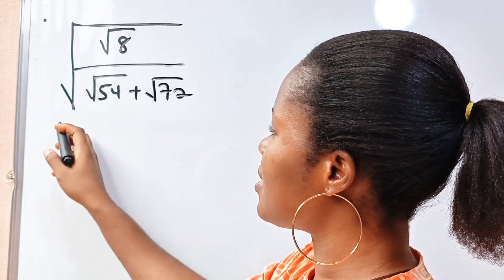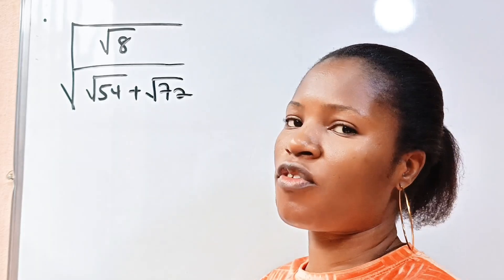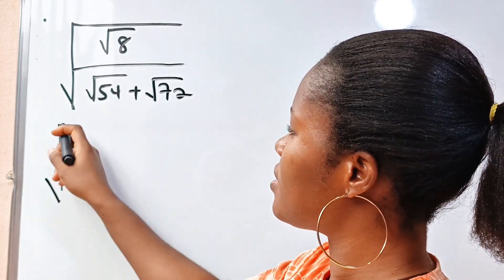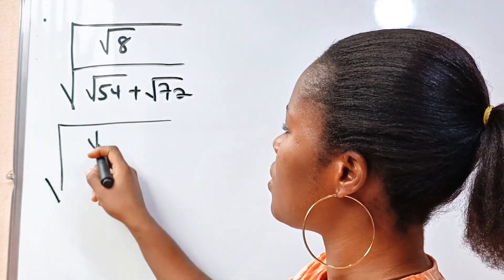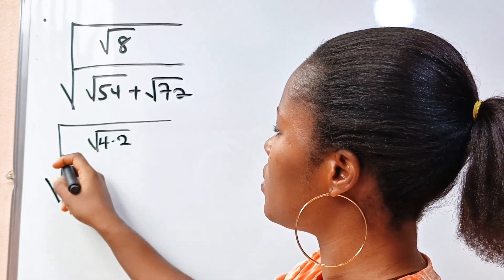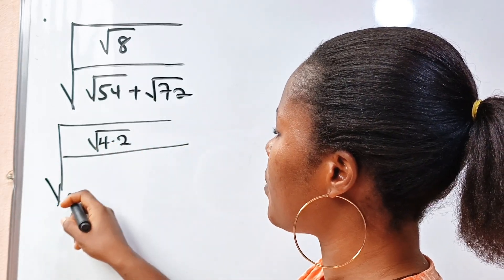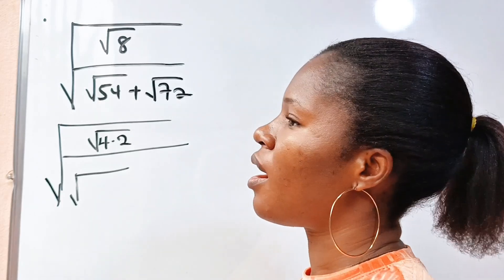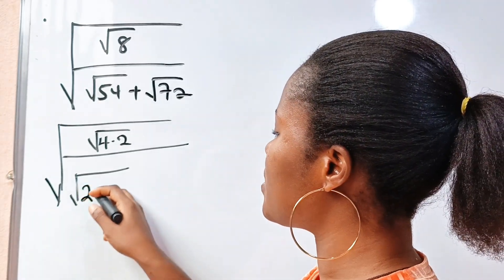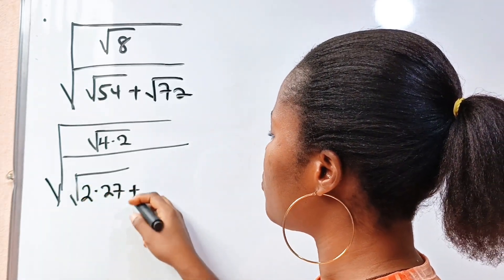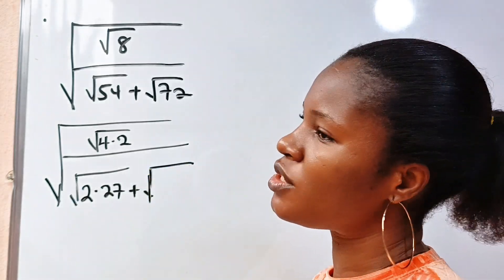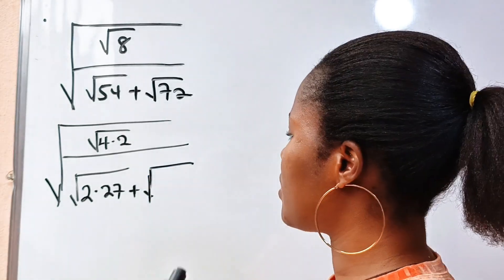Note that 8 can be written as 4 multiplied by 2. So we can write this as square root of 4 multiplied by 2, divided by square root of — and 54 is 2 multiplied by 27 — plus square root of — and 72 is 36 multiplied by 2.